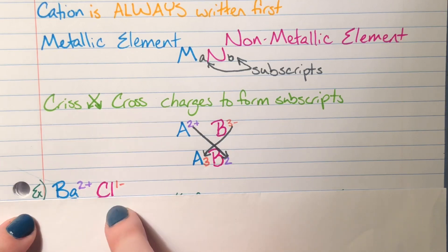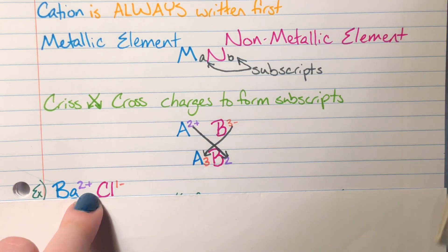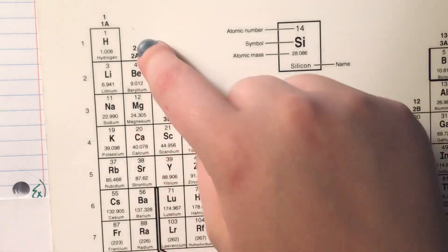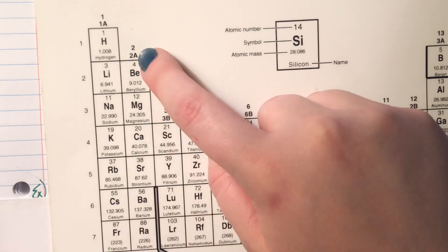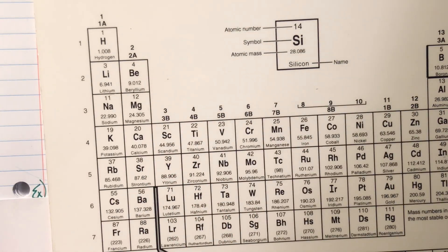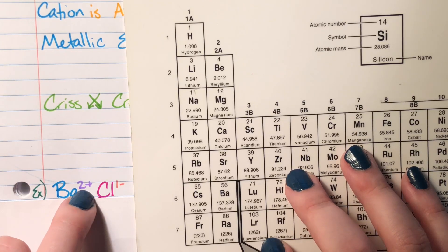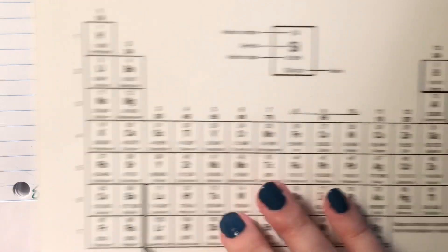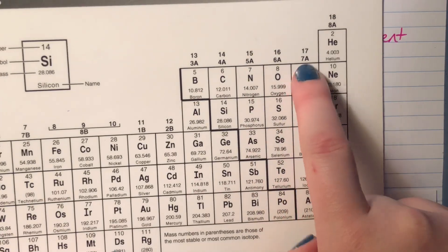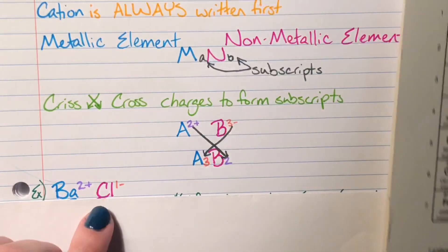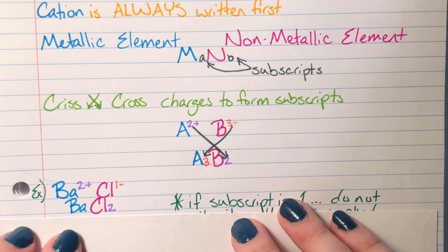Let's look at a real compound: Ba for barium and Cl for chlorine. Barium is element 56, in column 2A, so it has two valence electrons. Two is far from eight, so it gives away two electrons — a gift — giving it a charge of +2. Chlorine is in column 7A with seven valence electrons; it needs eight, so it steals one rather than give away seven, giving it a charge of -1.